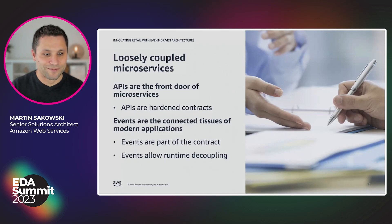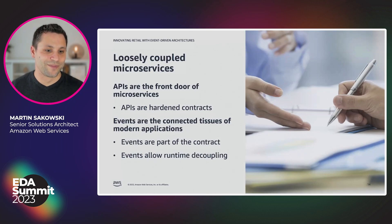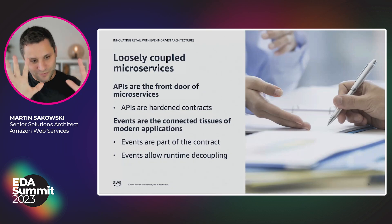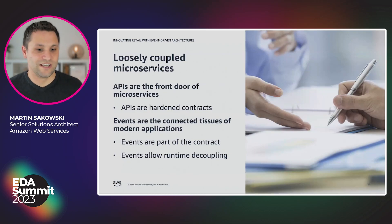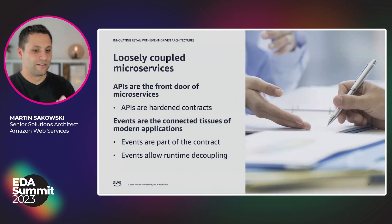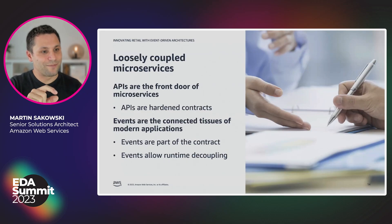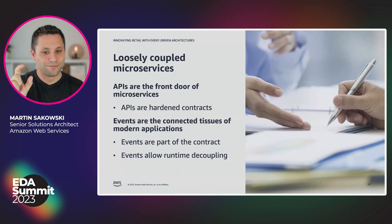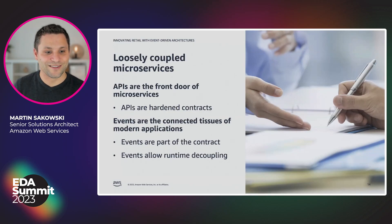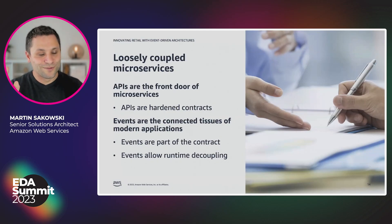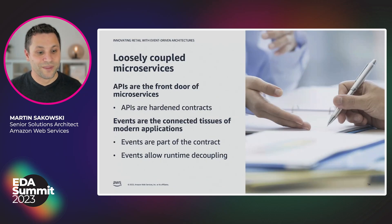With events, there's a saying: 'events are the connective tissue of modern applications.' With events, we apply the same principle but want even more decoupling. We decouple through a contract — but the contract is not an API, the contract is the event itself. We also decouple through the runtime, because of the asynchronous nature of events. We're not dependent on the consumer being available at the time the event occurs — we can process it later.